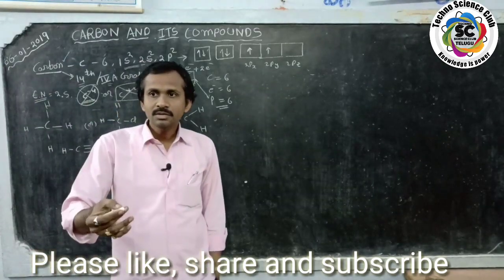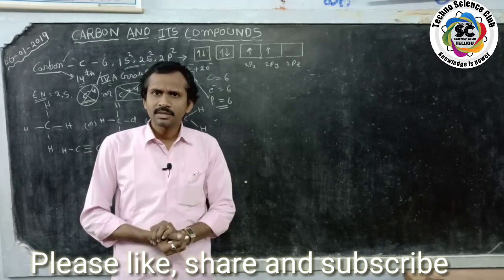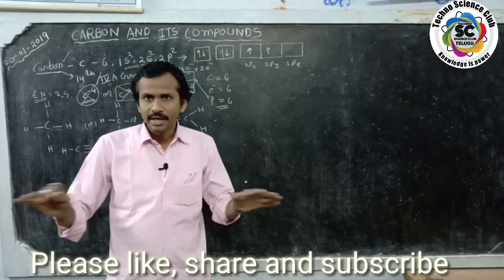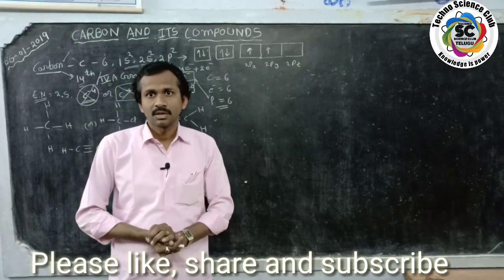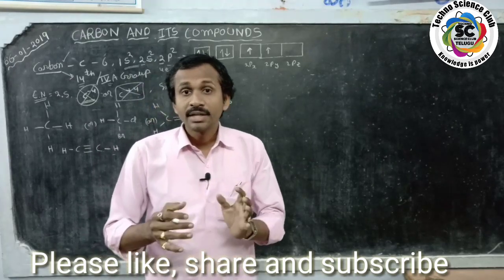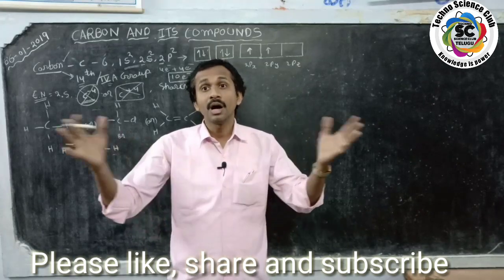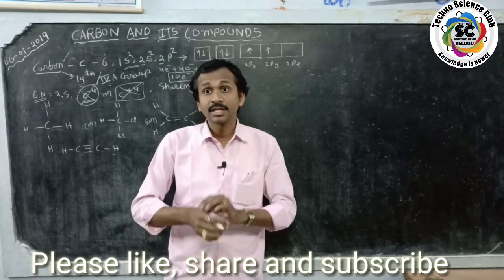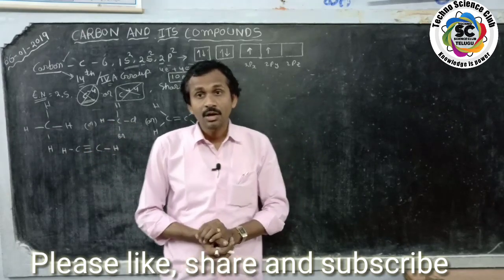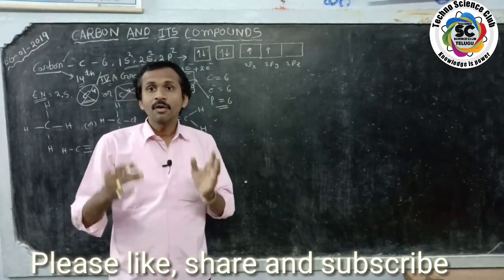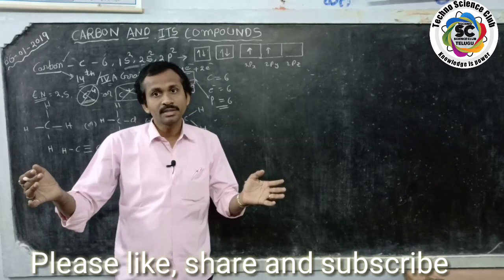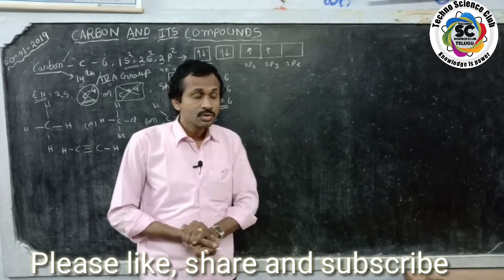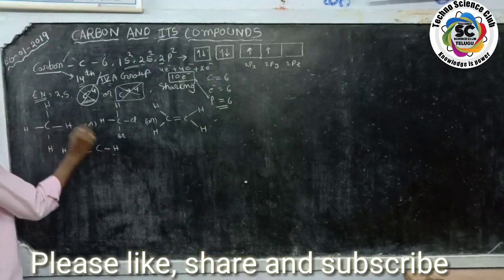Carbon cannot gain electrons. Carbon cannot lose electrons. How does it become stable? Carbon gets stability by sharing - not by losing, not by gaining, but by sharing. The carbon gets stability by sharing four electrons with other elements or with the same type of carbon atoms, forming four covalent bonds. Therefore, carbon has tetra valency.